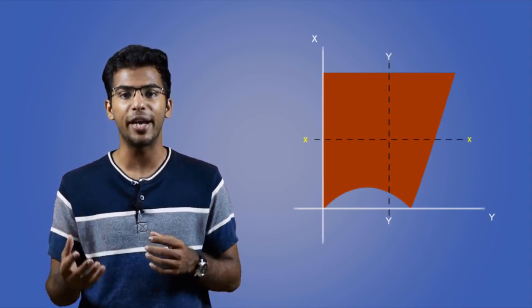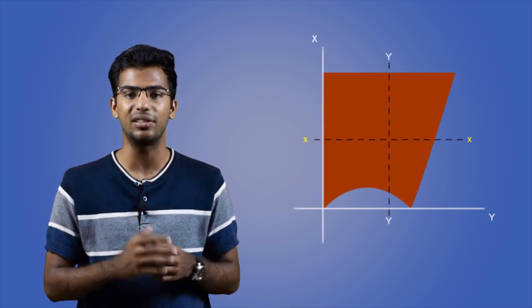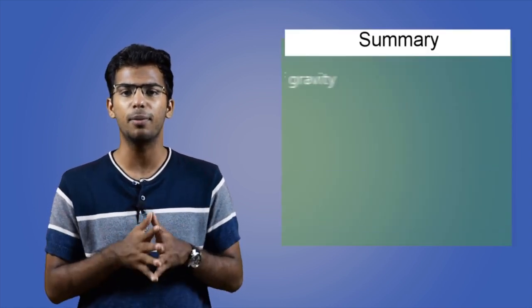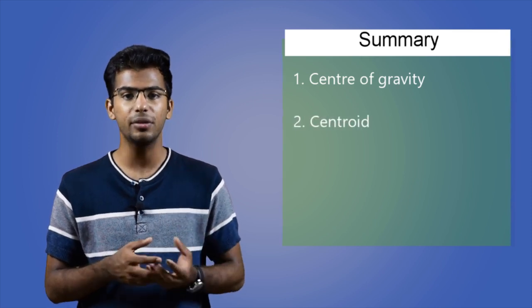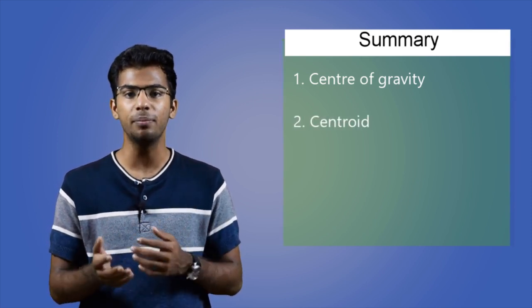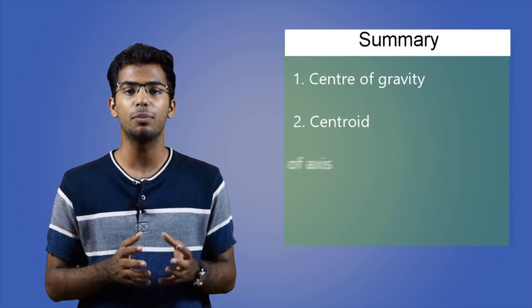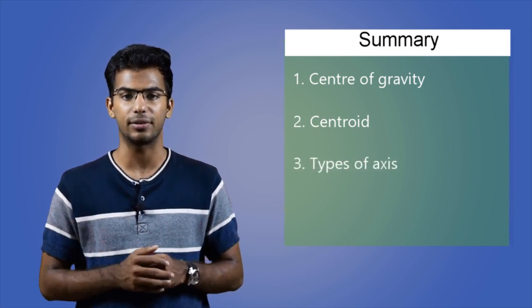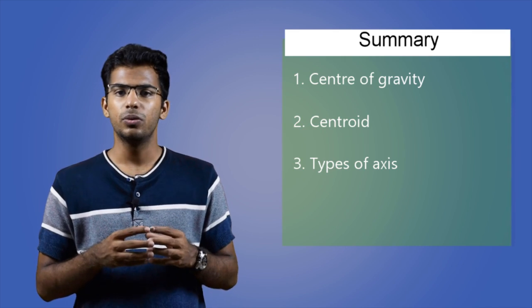And we need to find both x and y coordinates of centroid in such shapes. So this is all about types of axis. To sum up, in this video we learned about center of gravity, the centroid, difference between the two of them, and then we learned about different types of axis. So having learned all these basic terminologies, we will derive centroids for some of the basic shapes in the coming videos. Do watch out for that.